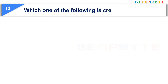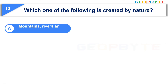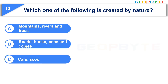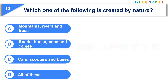Which one of the following is created by nature? Option A: Mountains, Rivers and Trees. Option B: Roads, Books, Pens and Copies. Option C: Cars, Scooters and Buses. Option D: All of these. Your time starts now.